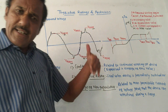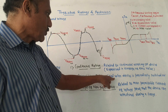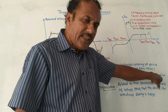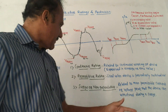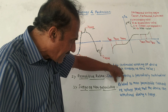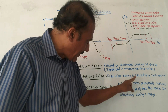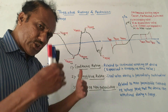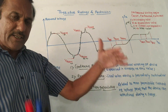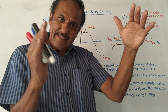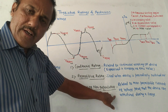Second is repetitive rating. As the name indicates, if the device is periodically or repetitively used, then such ratings are used — these ratings are used when the device is periodically switched on. Third is surge or non-repetitive ratings. Surge means any excess value. These are related to the maximum permissible current or voltage peak — the maximum allowed voltage or current value that the device can withstand during a surge.